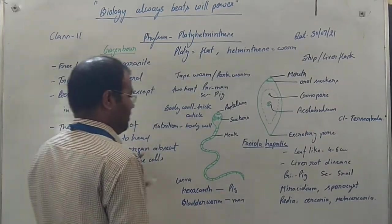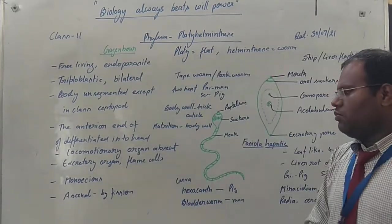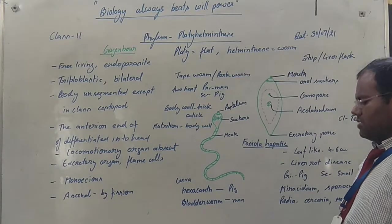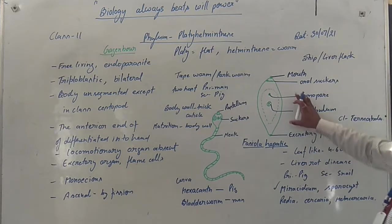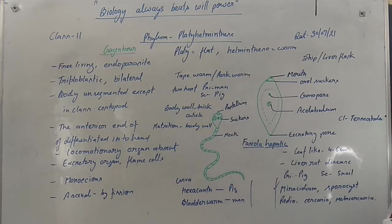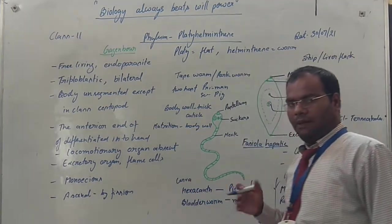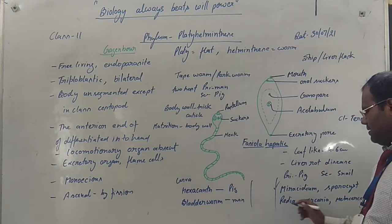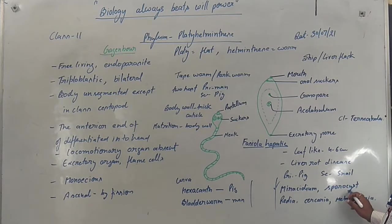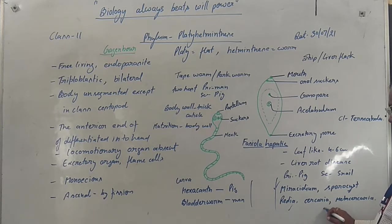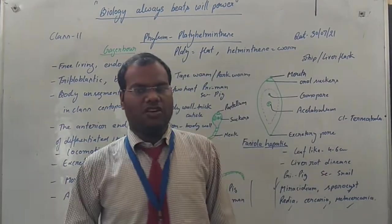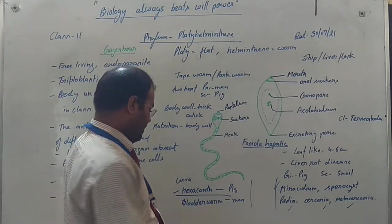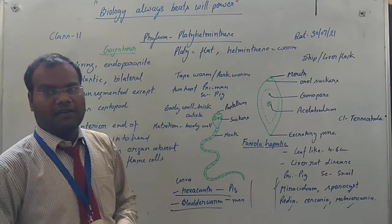Monoecious means male and female reproductive organs are present on the same body. Asexual reproduction occurs by fission; sexual reproduction by internal fertilization. Larval stages are found in this phylum — development is not direct. In Fasciola hepatica, the larval stages are: miracidium, sporocyst, redia, cercaria, and metacercaria. In Taenia solium, hexacanth is the larval stage present in pig, and bladder worm is the larval stage present in man.